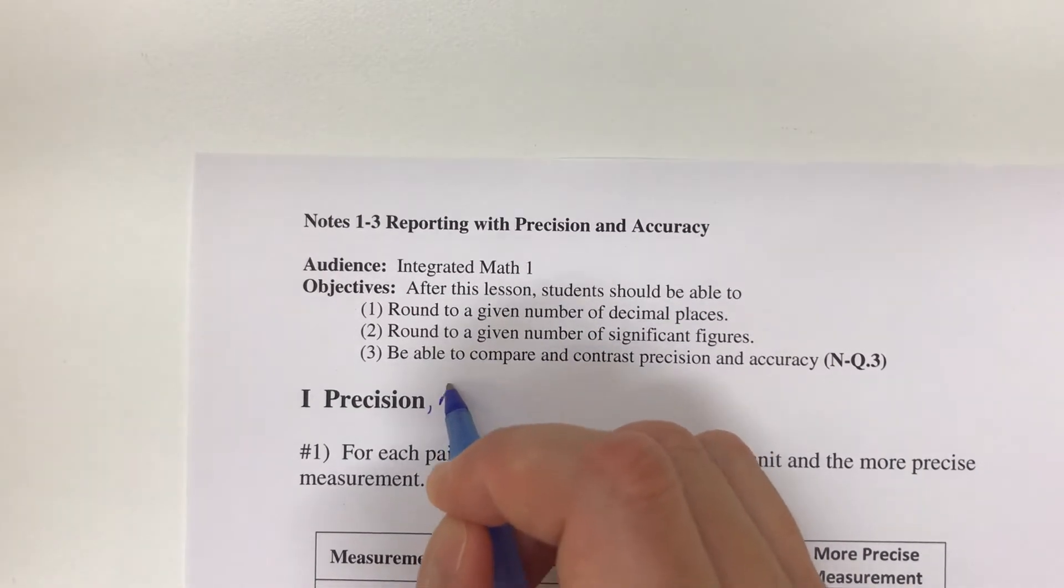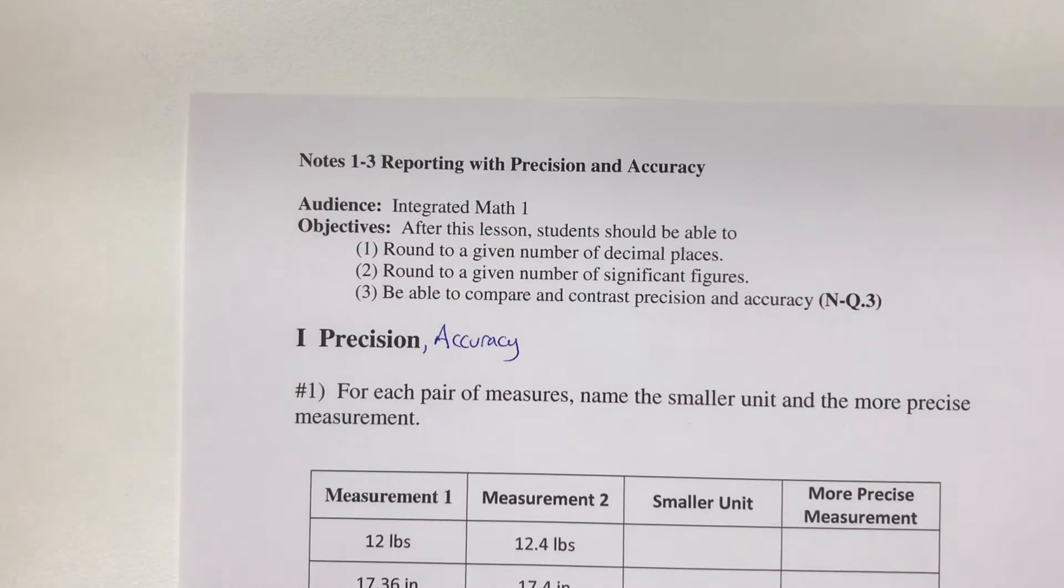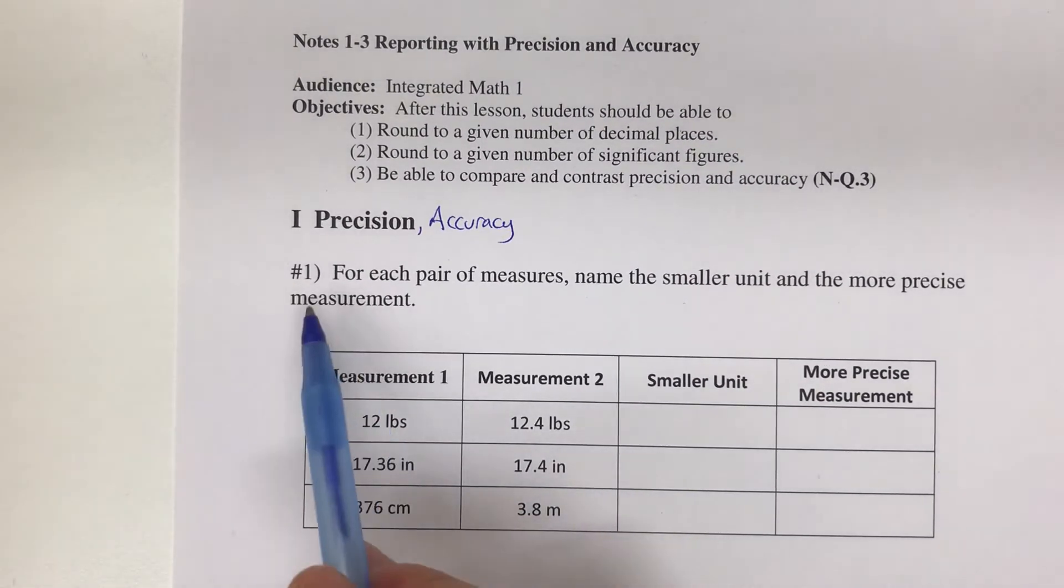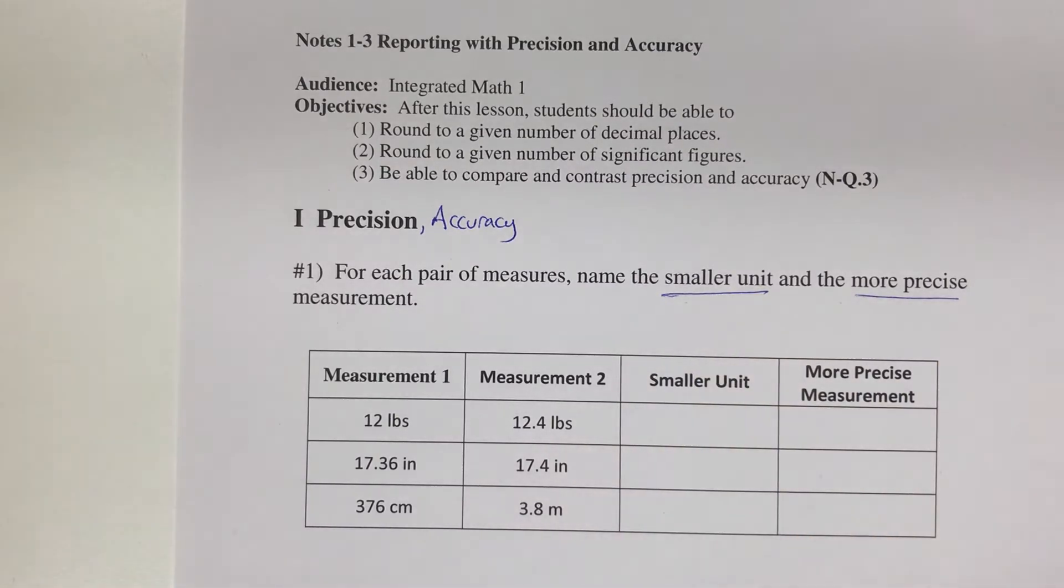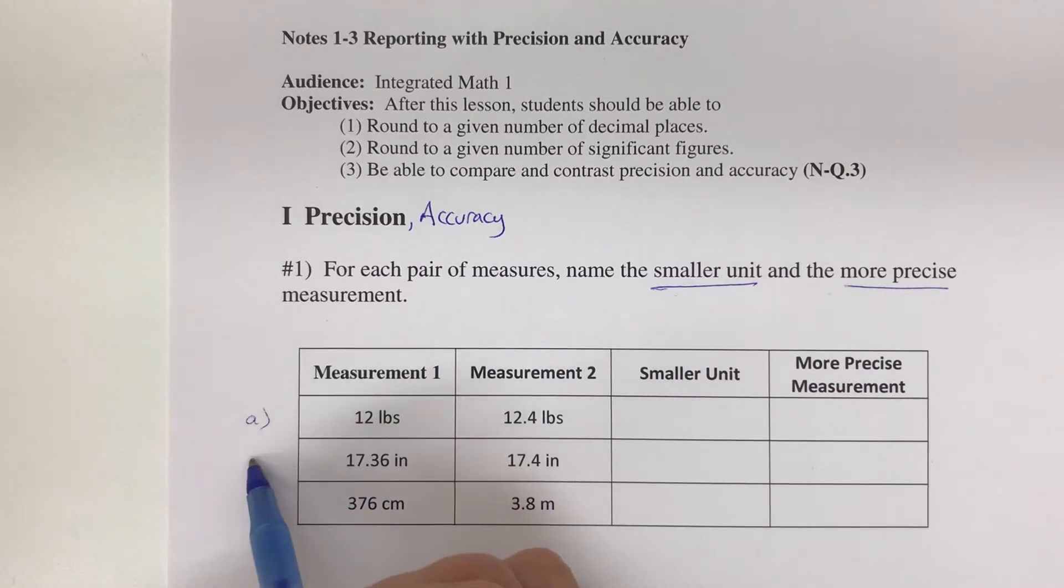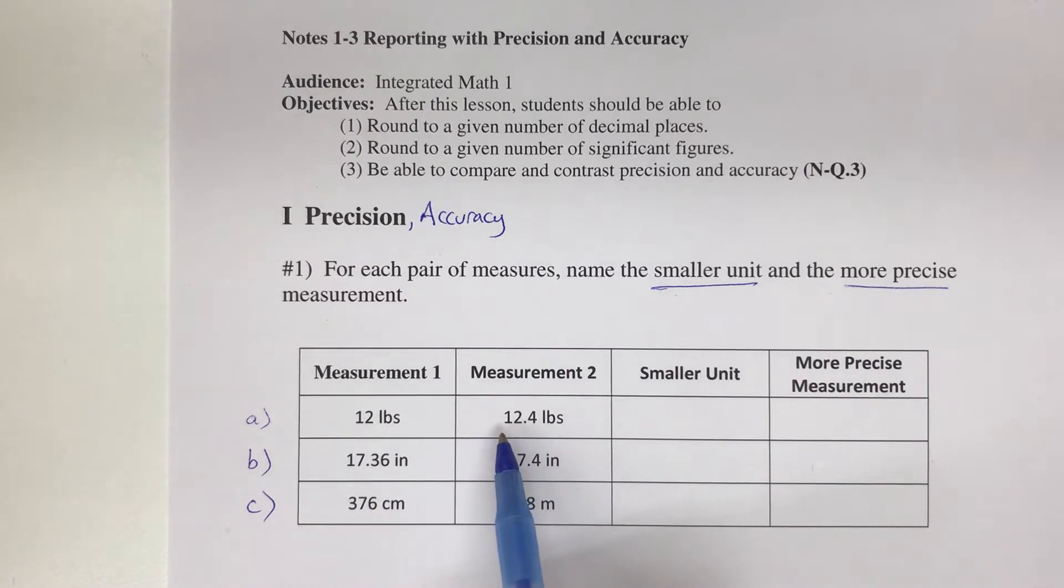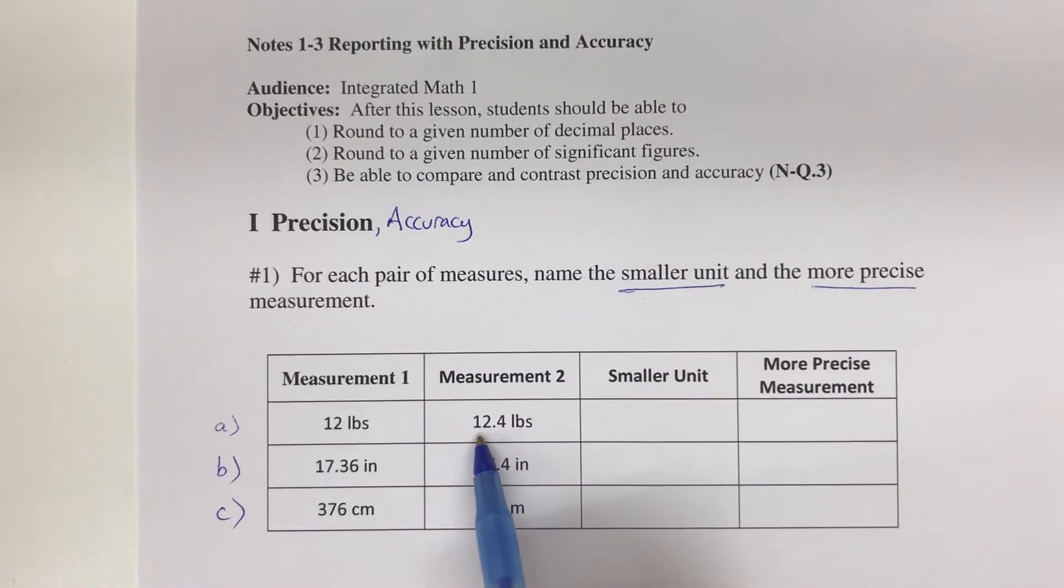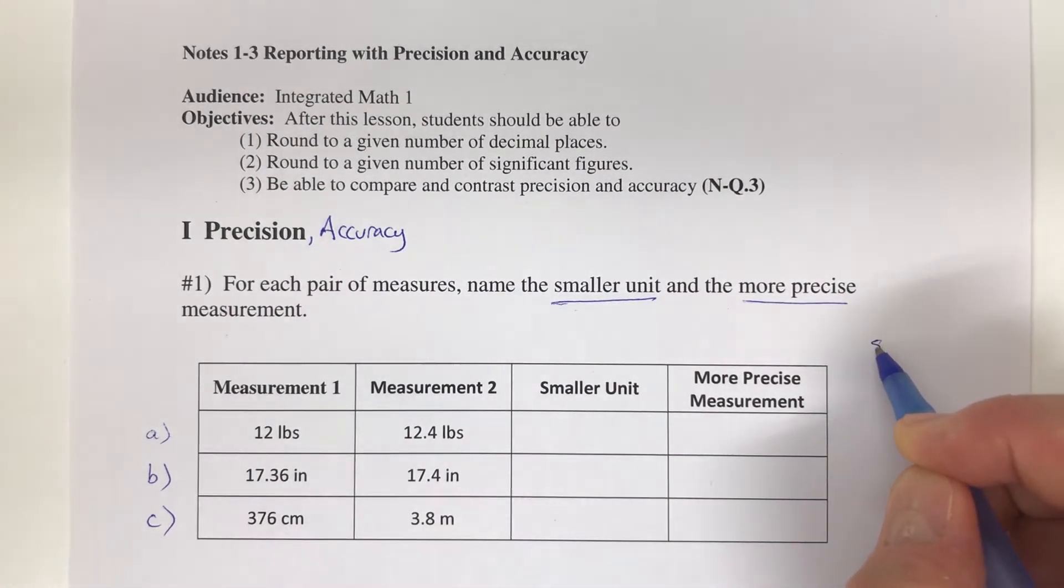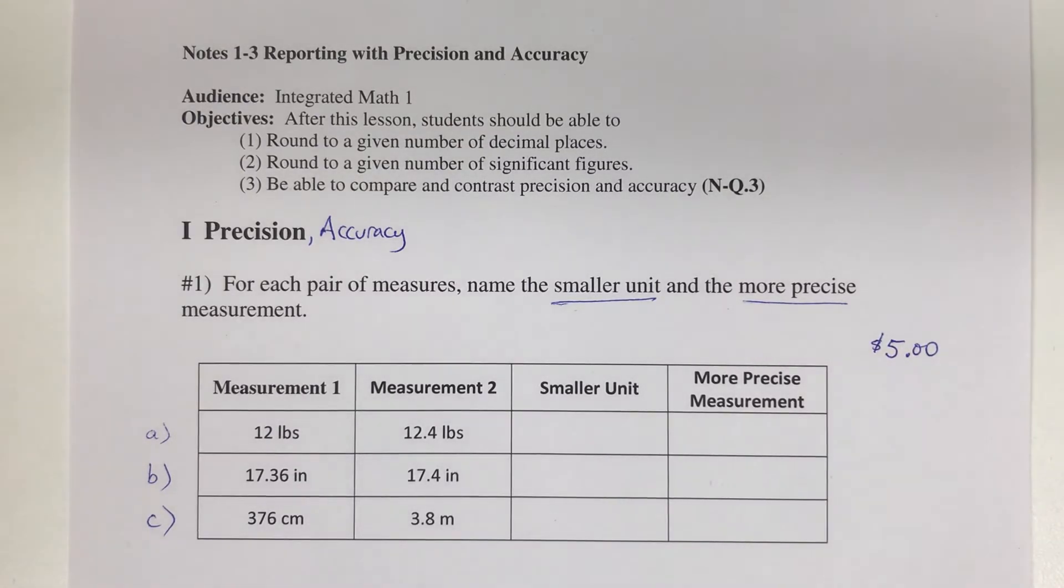We're going to start with precision and accuracy and look at what those two things mean by comparing measurements. In number one, for each pair of measures, name the smaller unit and the more precise measurement. In part a, our two measures are 12 pounds and 12.4 pounds. If they're the same unit, the measurement with more decimal places is the smaller unit. For example, if we think about money, if I write five dollars, that gives you some information.